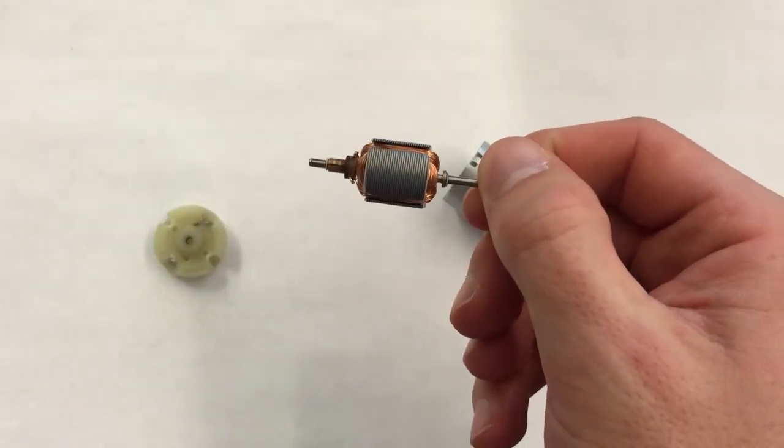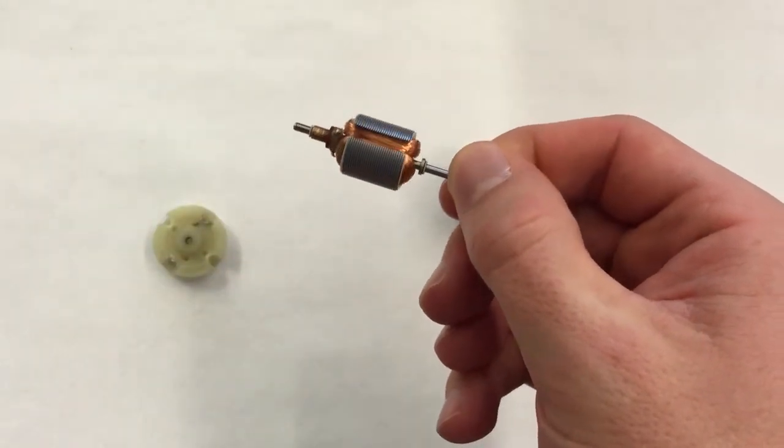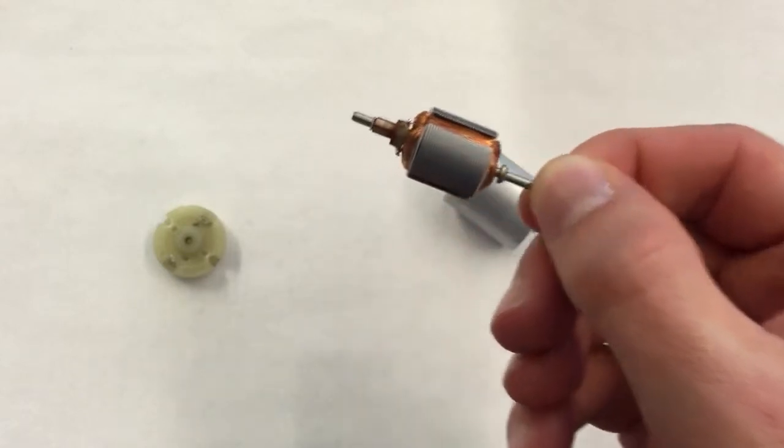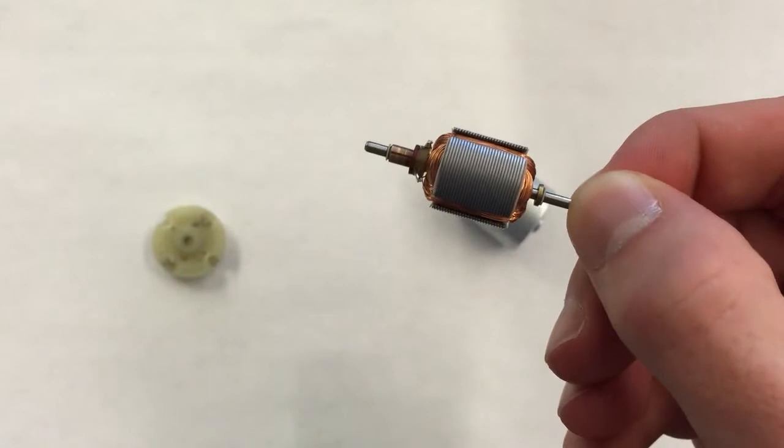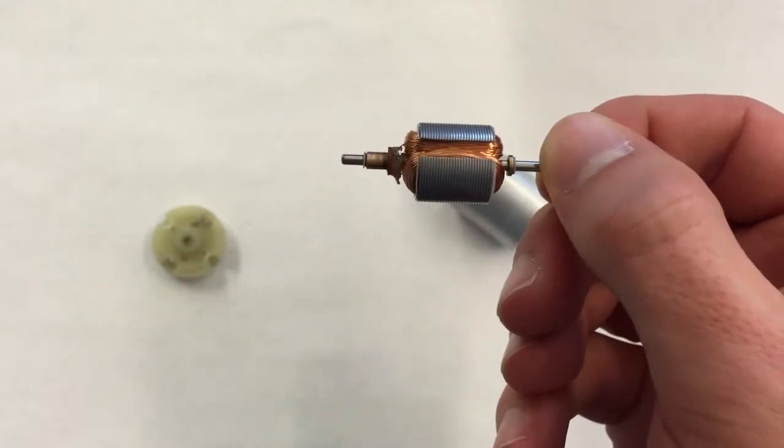This is the armature. It's made of copper wires wrapped around thin metal plates. At the top, you can see the commutator rings, which transfer electricity from the brushes to the coils.